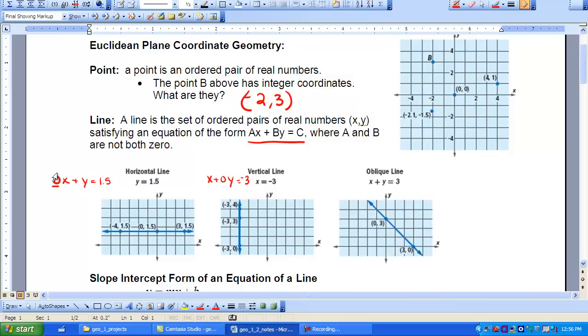So if I put a negative 4 in place of X, zero times the negative 4 plus the Y, which is 1.5, that would equal 1.5.